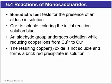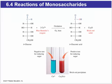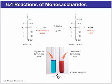Benedict's test uses what's known as Benedict's reagent, which contains copper plus two, which is blue in color. In the presence of a reducing sugar, or a sugar that is easily oxidized, copper plus two gets reduced to copper plus one.